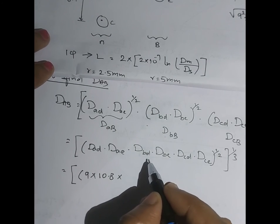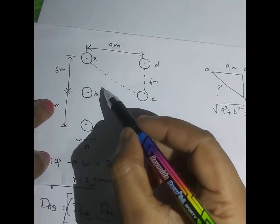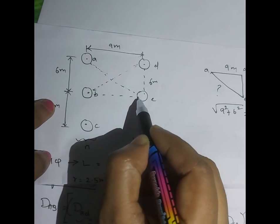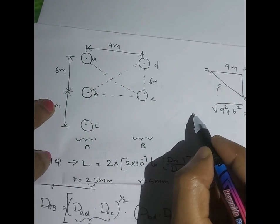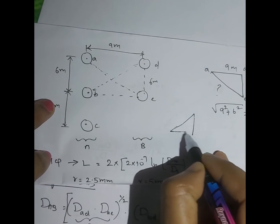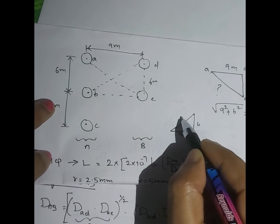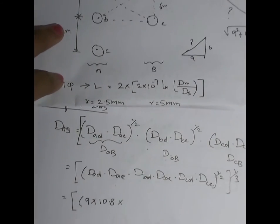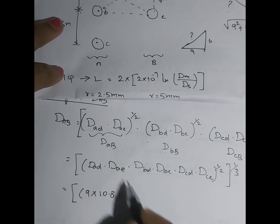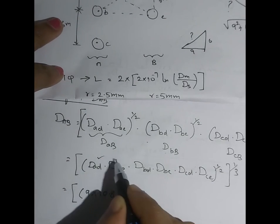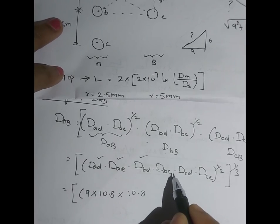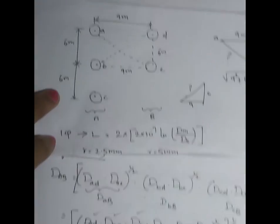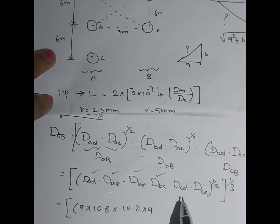Multiplying by Dbd (B to D): this also forms a triangle with sides 9 m and 6 m, so √(9² + 6²) = 10.8 m. Dbd = 10.8 m. Then Dbe (B to E): from the diagram, B to E is again 9 m.